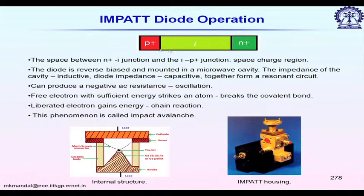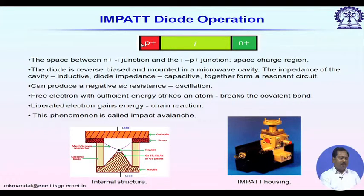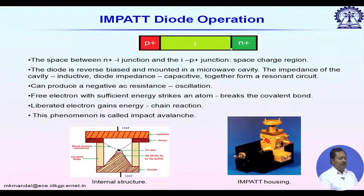IMPATT diodes generate negative resistance for AC signals. For a typical p+in+ structure, it is kept under reverse biased condition, so the positive side is connected to the n+ region and electrons are accelerated and move towards the n+ region. This n+ region is used for electron-hole pair generation via the avalanche impact effect.